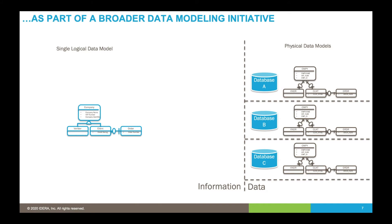We will have a single logical data model on the left — an enterprise or corporate logical data model, or a canonical model. The process is we'll reverse engineer each database, creating a physical model. We may or may not have a local logical model for that project, but the important step is that we're going to map each of the physical models, by table and by column, over to the common logical model on the left. From logical entities and attributes on the left, we can then see which physical data assets contain that information.